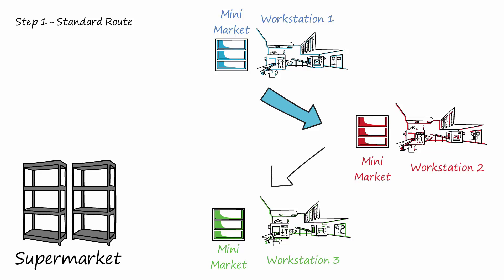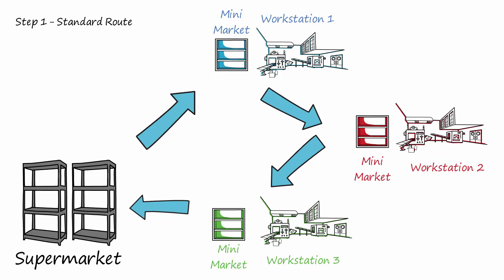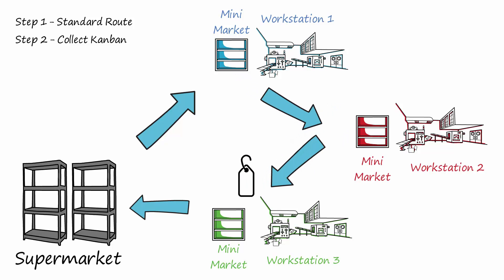Step 1: The water spider takes a standard tour of each location in the workshop. In each station, the water spider will find small warehouses called mini-markets. The mini-market is organized according to the 5S and visual management methods. Step 2: The water spider collects the Kanban signals left by the station operators. Kanban signals can be in the form of a tag, container, or other.